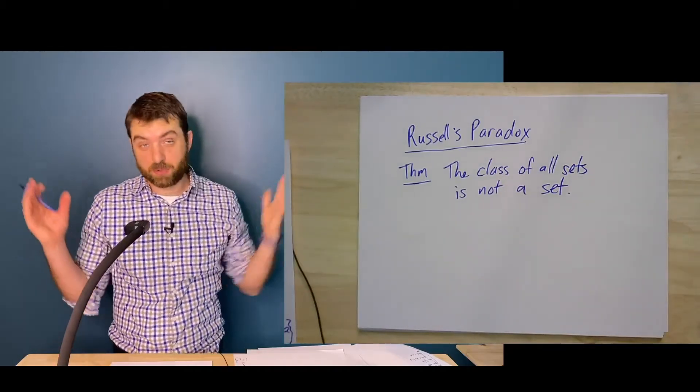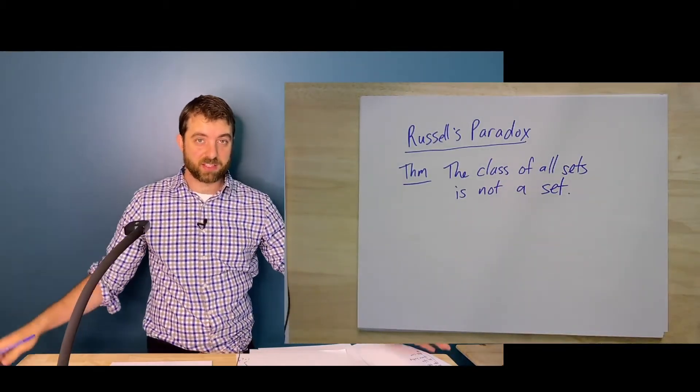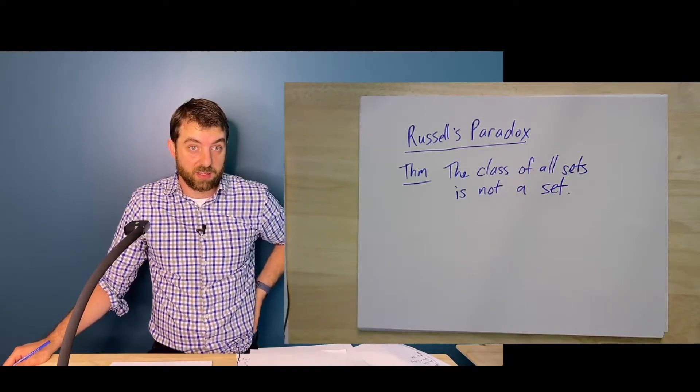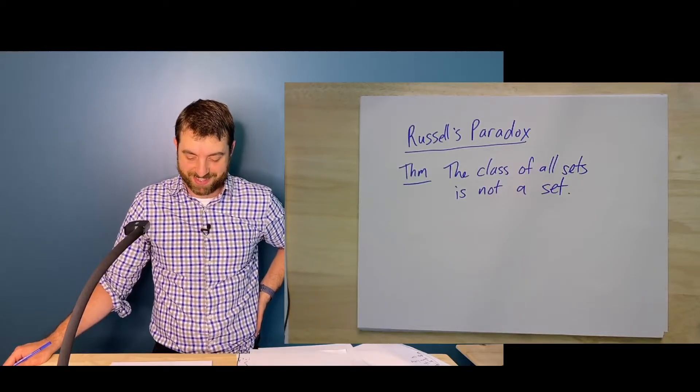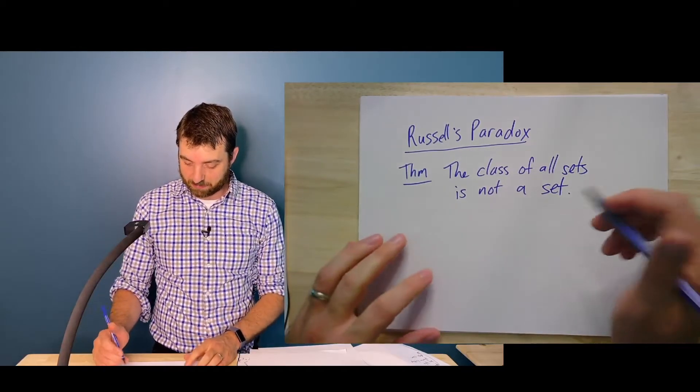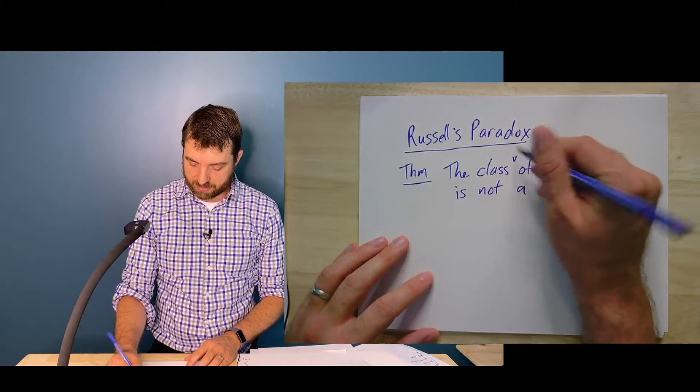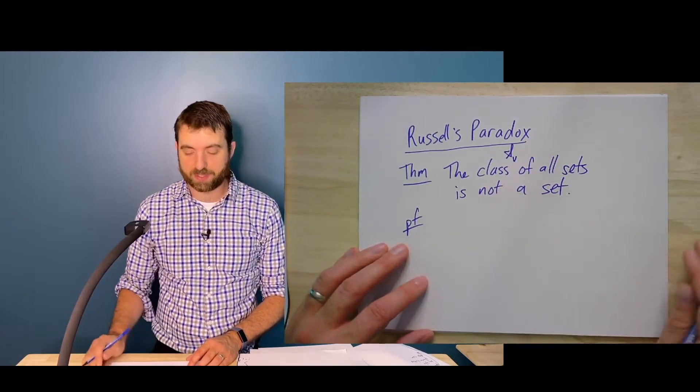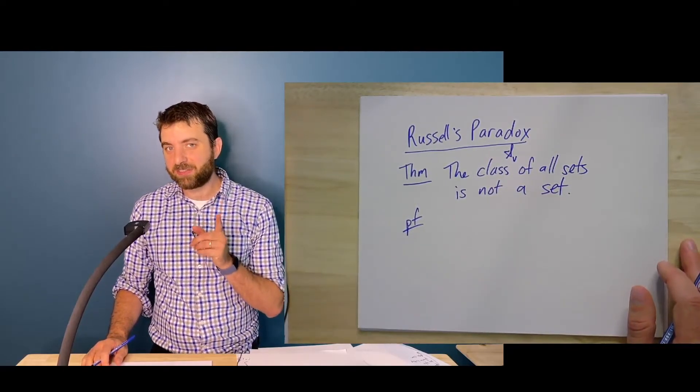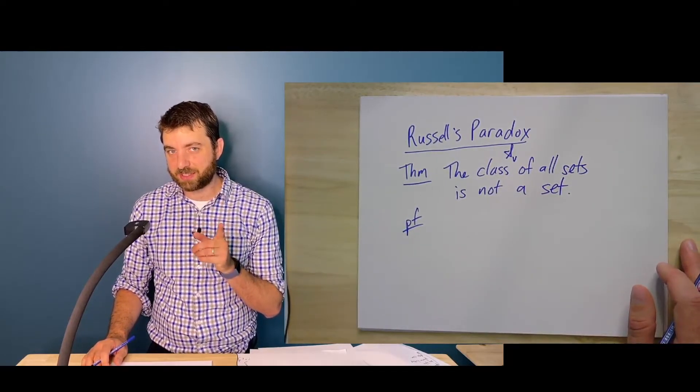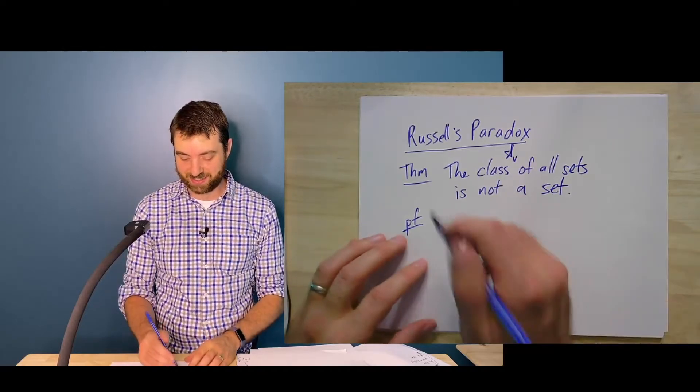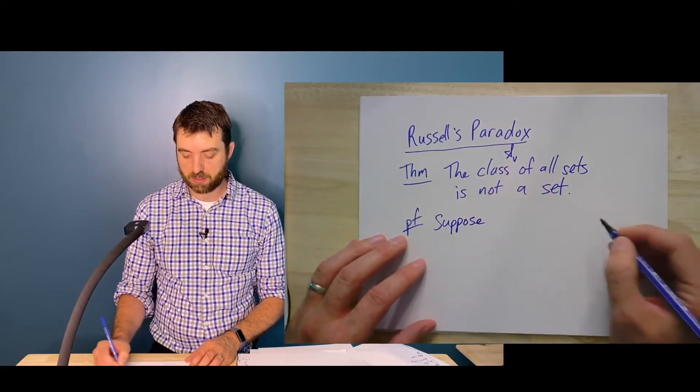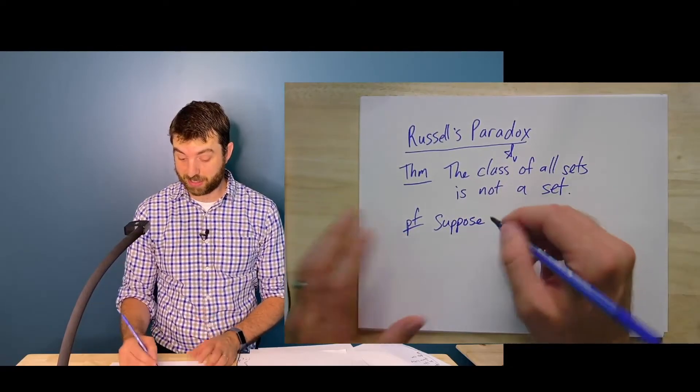All right, so if I have sets and I can just put things in sets and I have a collection of things and I can say that collection is a set, then I would be able to say, well, if it's a set, then put it into this set, the set of all sets. Let's give it a name. Let's call it script S here. And the proof is quite simple. You see, if the set of all sets really is a set, or the class of all sets really is a set, then we'll prove this by contradiction. We'll suppose that it is a set.